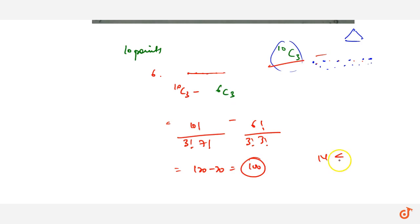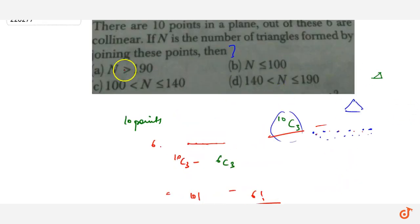N would be equal to less than or equal to 100. So here, our B part is correct.